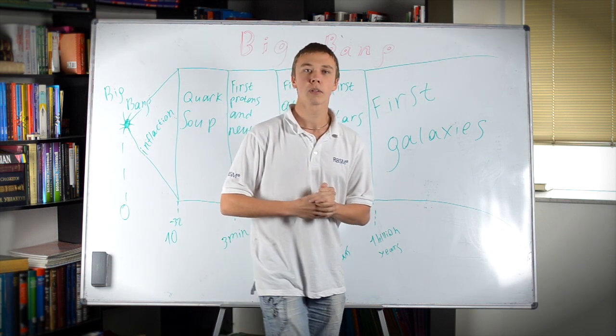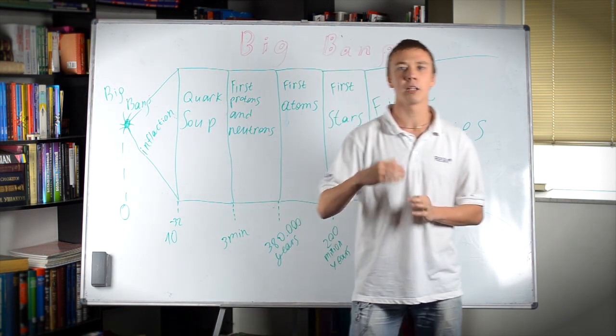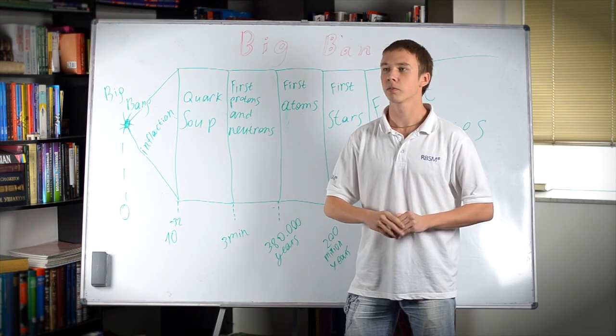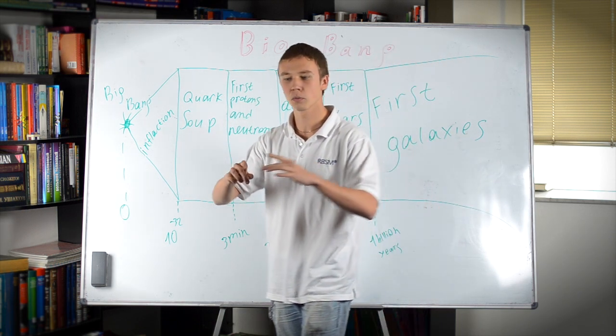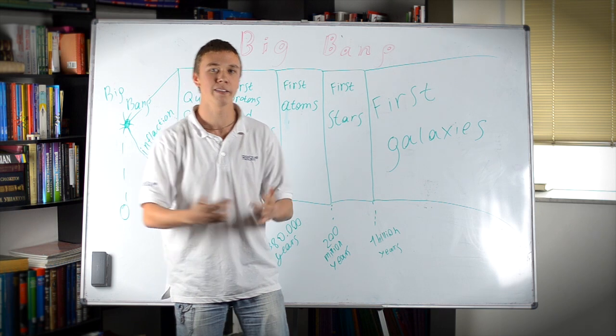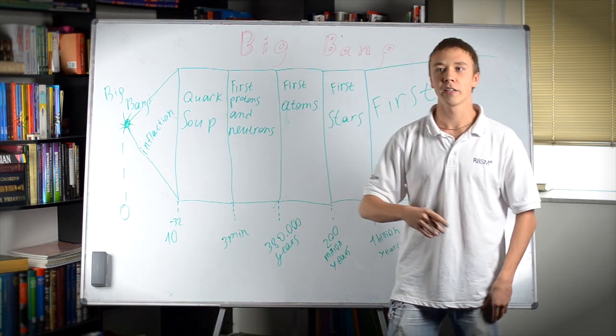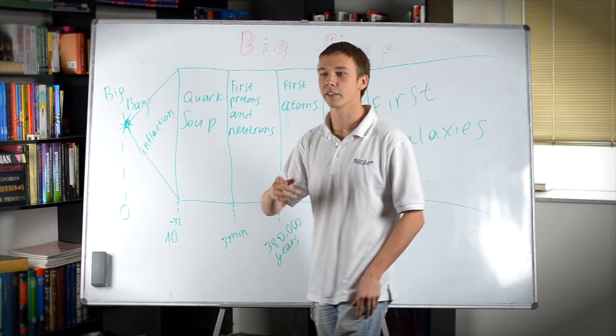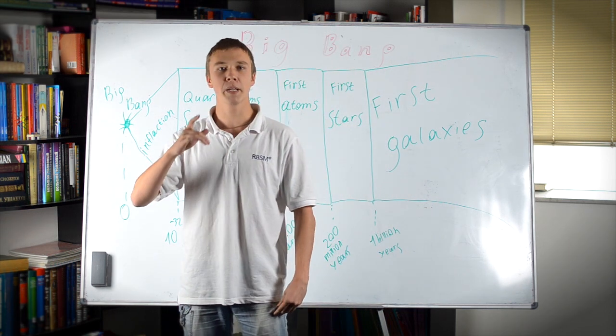In 1929, American astronomer Edwin Hubble observed that different galaxies are not only moving away from us, but the whole universe is expanding. This gave rise to the idea that the universe has originated in a massive Big Bang.